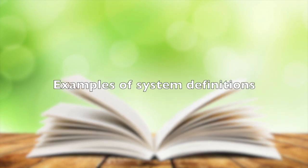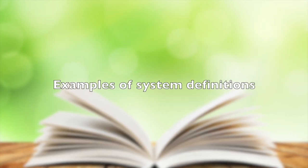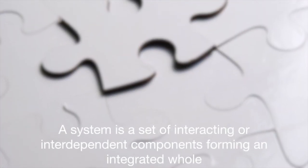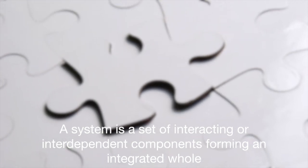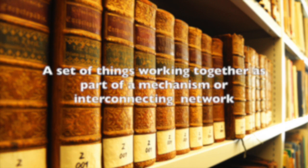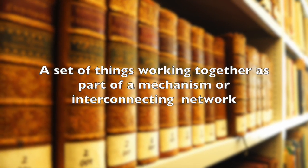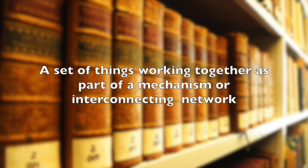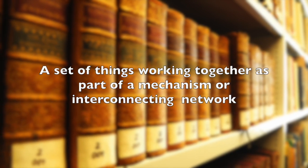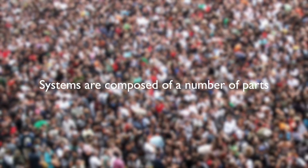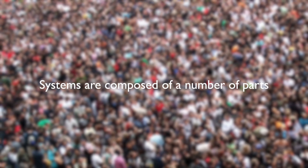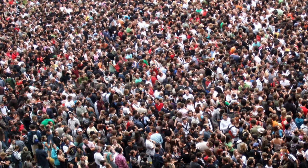There are many definitions for a system out there, so let's take a few quick examples. Wikipedia tells us that a system is a set of interacting or interdependent components forming an integrated whole. Or according to the Oxford Dictionary, a system is a set of things working together as parts of a mechanism or an interconnecting network. Firstly, a system is a group of parts — it is a composite entity composed of a number of things. In the language of system theory, we call these parts elements.